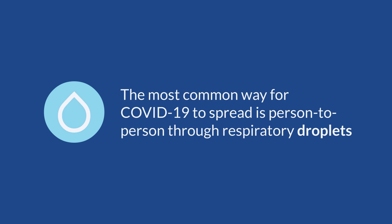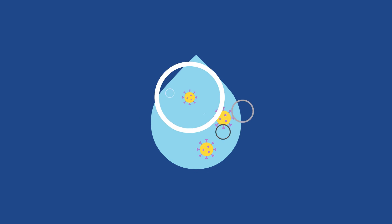The most common way for COVID-19 to spread is person-to-person through respiratory droplets. Respiratory droplets are the tiny bits of saliva and germs that come out of our mouth and nose when we breathe. Even though respiratory droplets are big enough to carry virus cells like COVID-19, you may or may not be able to see them.